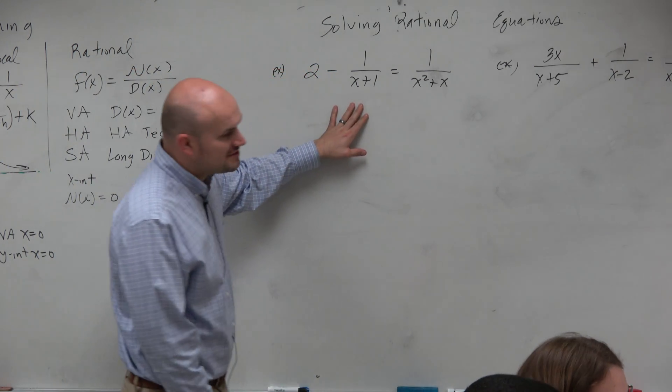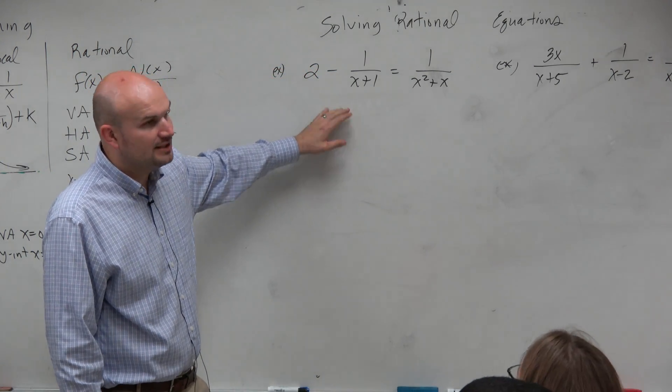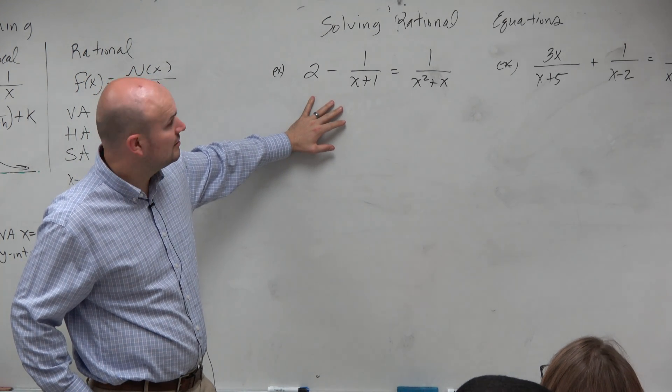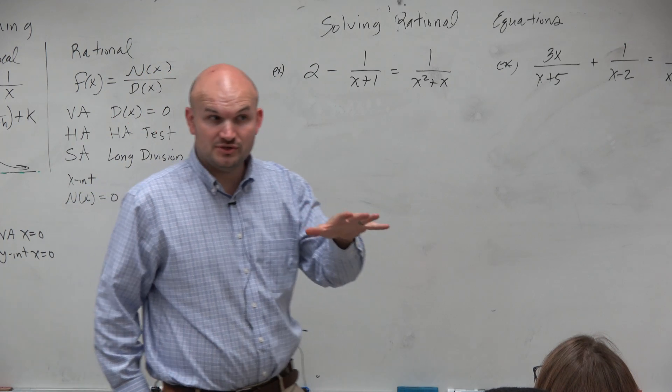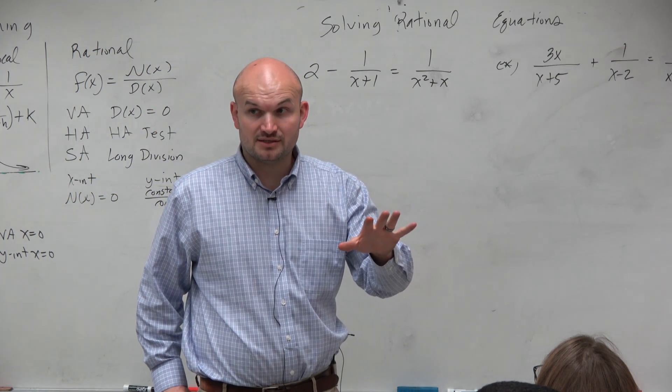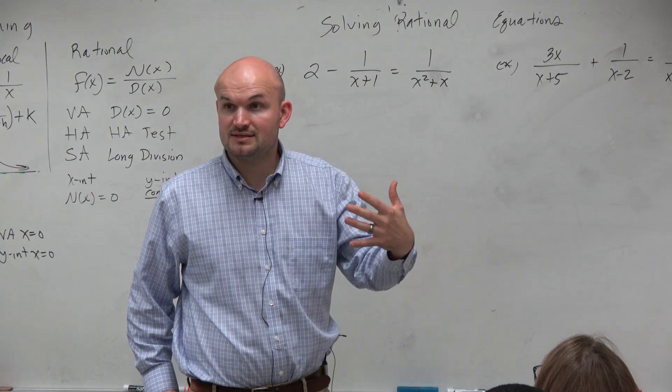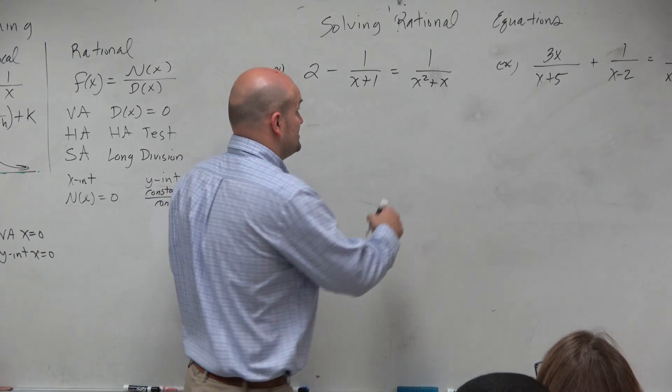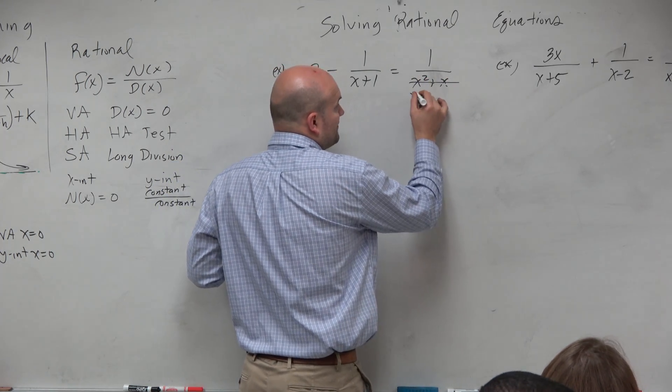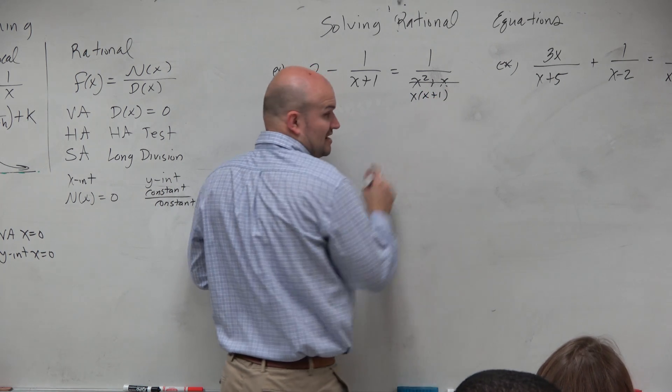So first example, or first thing we want to look at in this one is we have 2 minus 1 over x plus 1 equals 1 over x squared plus x. Now, I saw a couple students automatically get into factoring, which is perfect. Anytime you see something that's factorable, let's look at this as far as a factored form.